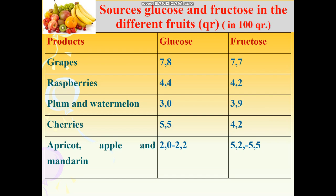Higher fructose sweetness allows using a smaller amount in food rations with calorie restriction. Sources of fructose are fruits and berries, honey, watermelon, melon, apple, pear, blackcurrant.